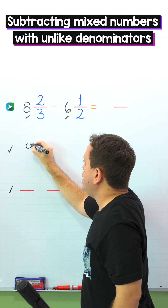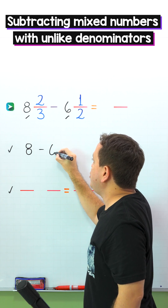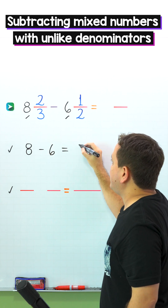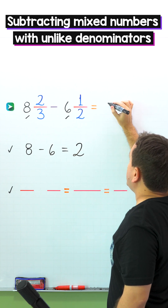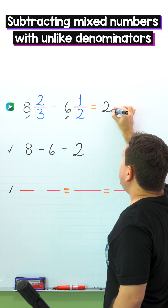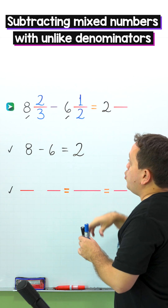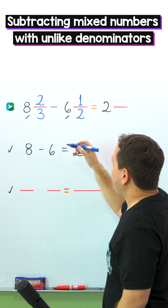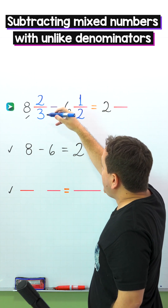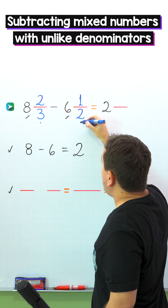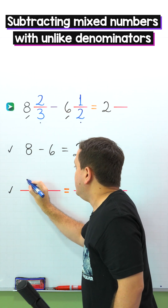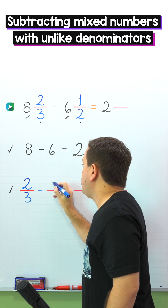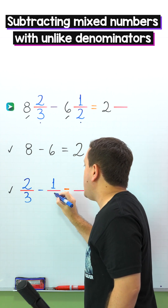We put 8 minus 6, and 8 minus 6 gives us 2. Next, we put 2 in the answer. We have the difference of the whole numbers. It's time to subtract the fractions. The fractions are 2 thirds and 1 half. In the same order, we put 2 thirds minus 1 half.